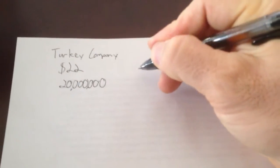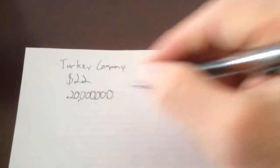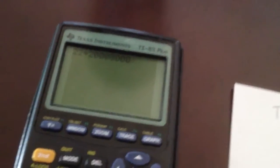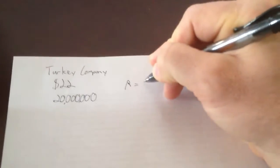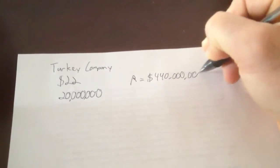So my revenue right now, remember, revenue is price times number sold. My revenue right now, if I took 22 times 20 million, and I'm going to go to my calculator here to make sure I don't tell you anything wrong. You get $440 million from selling turkeys. Sounds like a really good retirement plan for me. $440 million right now.